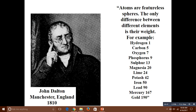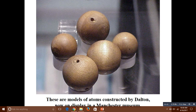And then John Dalton proposed that atoms are indivisible spheres. The only difference between different elements in the world — for example, hydrogen and carbon — lies in their atoms. This is the atomic construction model by Dalton.